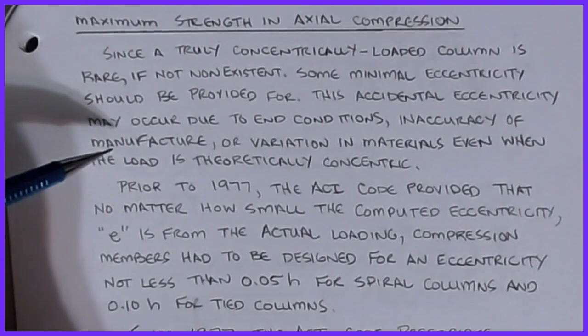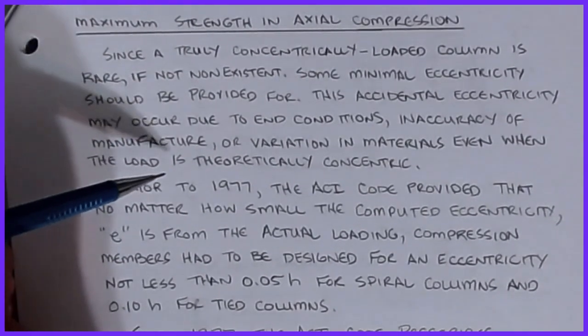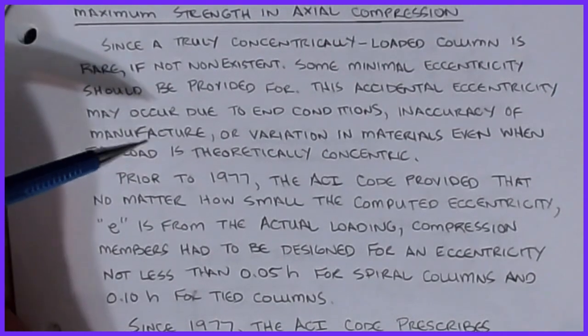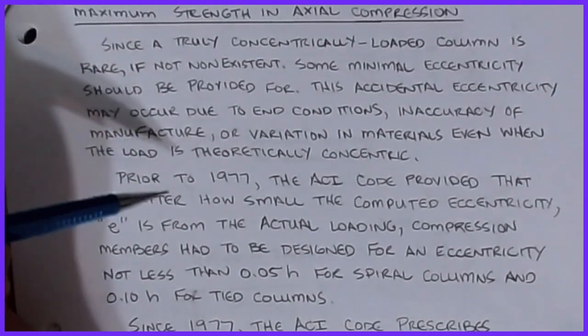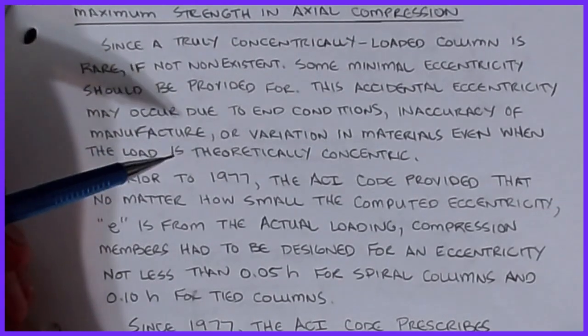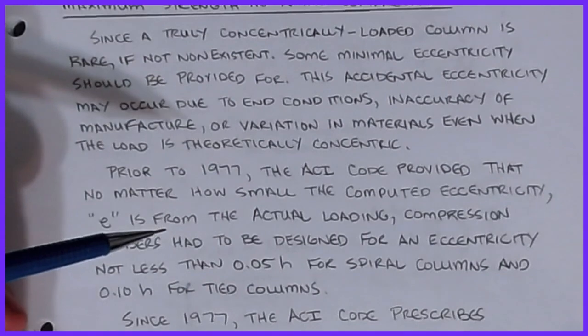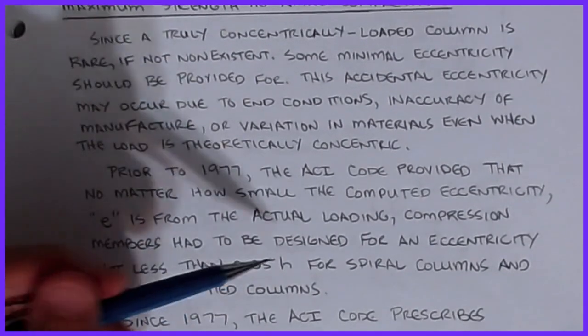Since a truly concentrically loaded column is rare if non-existent, some minimal eccentricity should be provided for the accidental eccentricity that may occur due to in-construction conditions, inaccuracy of manufacture, or variation in materials, even when the load is theoretically concentric.